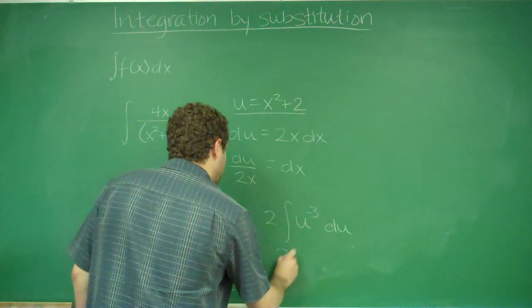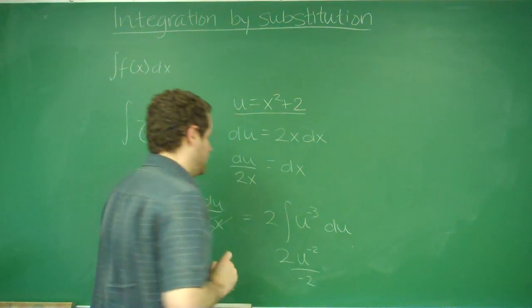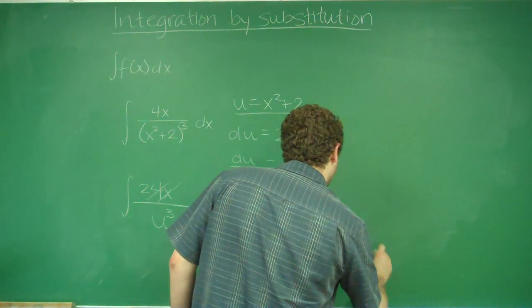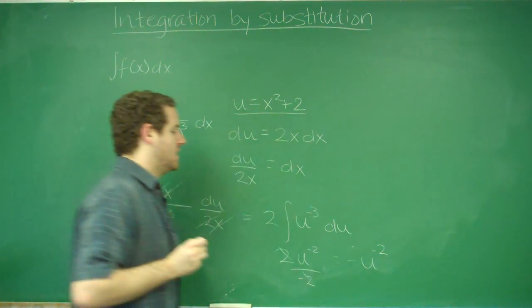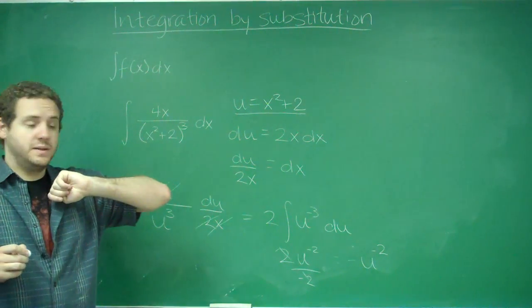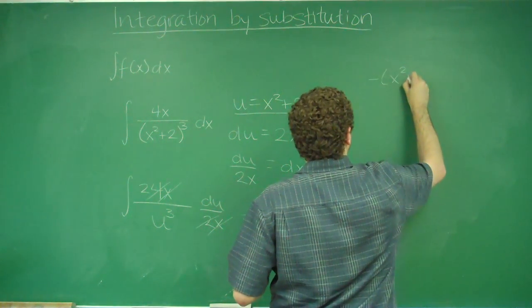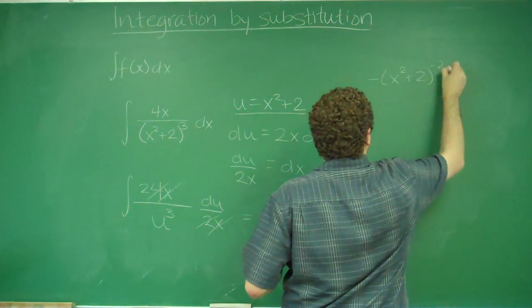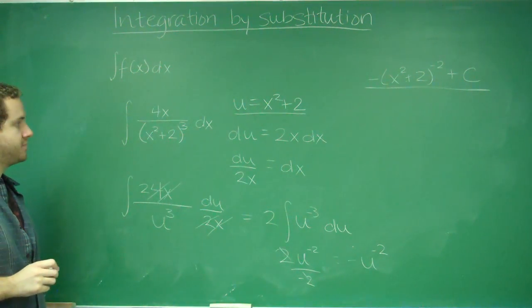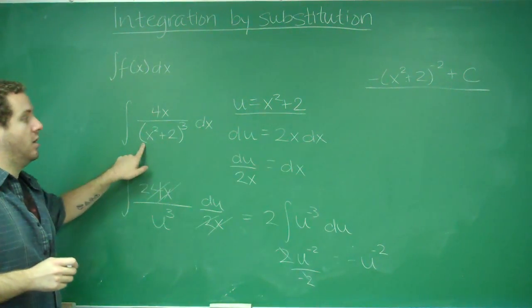What we're going to get here is 2, u to the negative 2 over negative 2, by using your power rule. This is going to cancel out, and we're going to get negative u to the negative 2. Lastly, we want to add in what we substituted for u in the first place. So we would have negative x squared plus 2 to the negative 2 plus c. Remember, you always have to add in the plus c at the end. And this would be our antiderivative of this function.